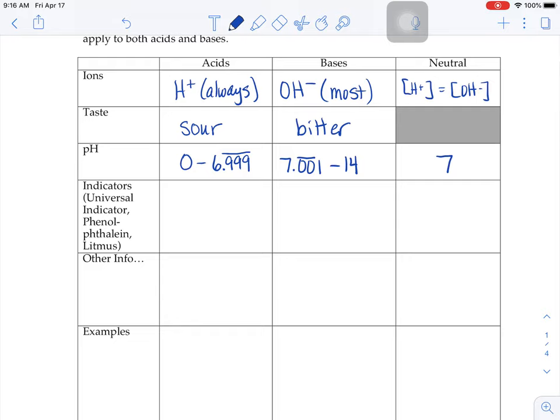You've learned about indicators in past science classes before and you've used a few in our class too. Universal indicator is one that we've used a few times in our classes. And universal indicator, if you put it in an acid, it's kind of a pink, red, orangey kind of color. In a base, it's more bluish purple. And when it's in its neutral state, it's green.